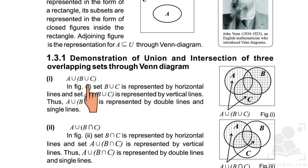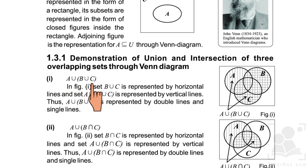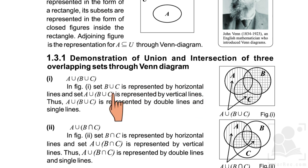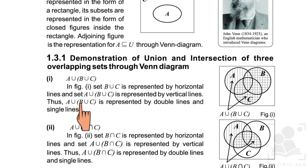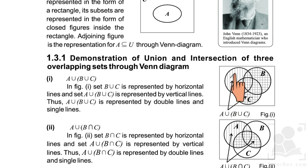First we have A union B union C. First we find the union of B and C sets, and then find the union of that result with set A. We represent set A with vertical lines. The vertical line is only in set A because we found the union of A only once, whereas the union of B and C was found twice, so it is represented with double lines.